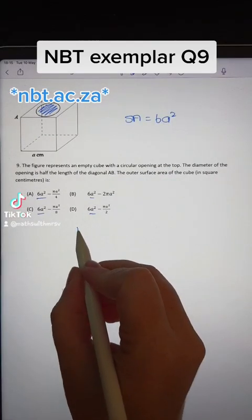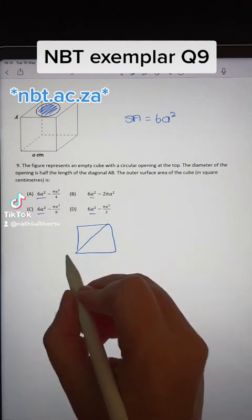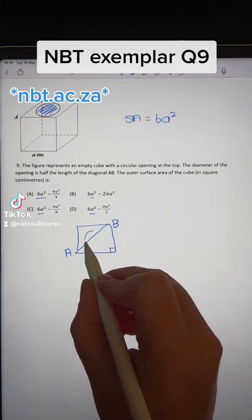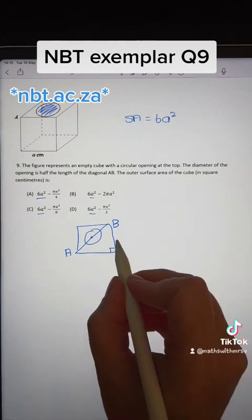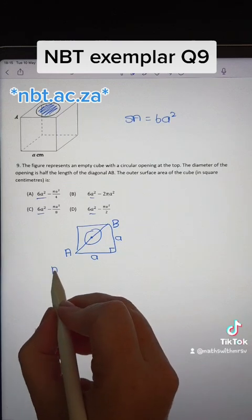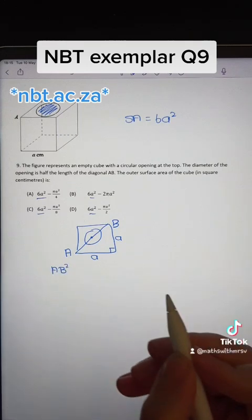If we have a look at the cube from the top, we have a square with a diagonal AB and it's a right angle with the circle in the middle that we're going to work out. Each side is equal to a centimeters, so we can use Pythagoras in order to work this out.